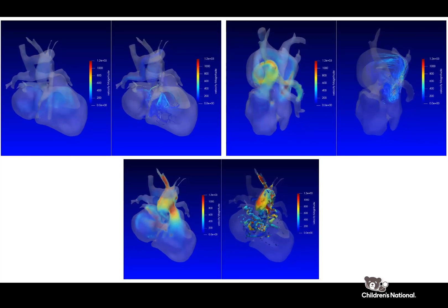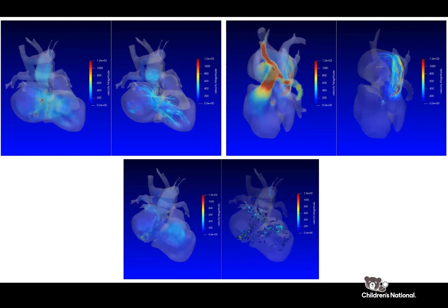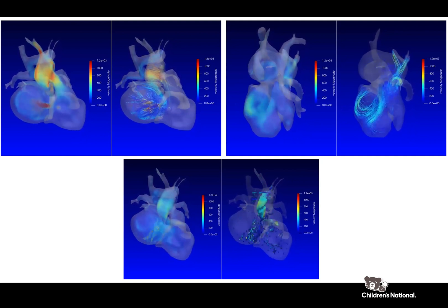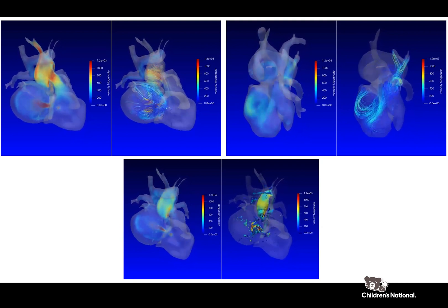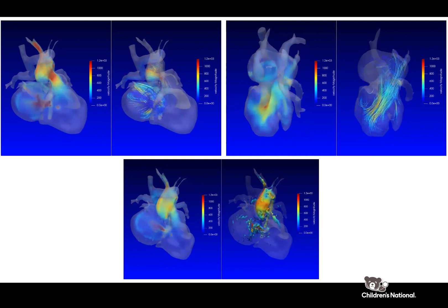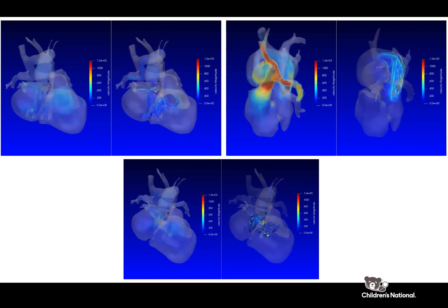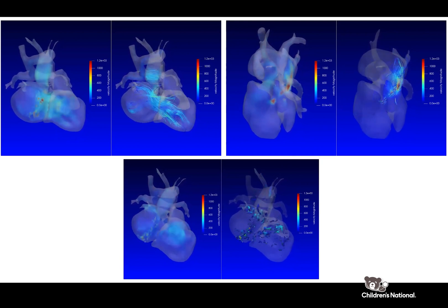These flow characteristics that we're visually seeing can also be measured. My research focuses on those measurements to see if there is a way we can measure the degree of vortex formation and the degree of energy loss that happens in the atrium as potential measurements of heart health — and use these measurements to potentially determine the health of single ventricle patients and guide management, particularly in patients before the Fontan procedure.